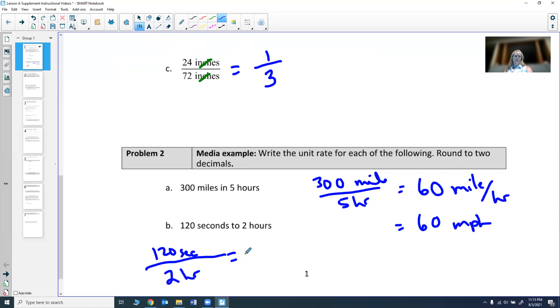It actually doesn't matter, it's really your comfort and what problem you're trying to deal with. So we have 120 seconds over 2 hours, and then 120 divided by 2 is 60. Seconds and hours do not cancel, so you have seconds per hour.